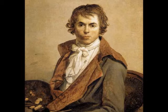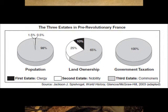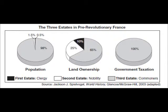Before we take a look at David's paintings, we need a brief overview of the pre-revolutionary French economy. As this chart shows, France was divided into three estates: the first, clergy; the second, nobility; and the third, everyone else — from the homeless to doctors and professors. As you can see, the third estate also held the entire tax burden.